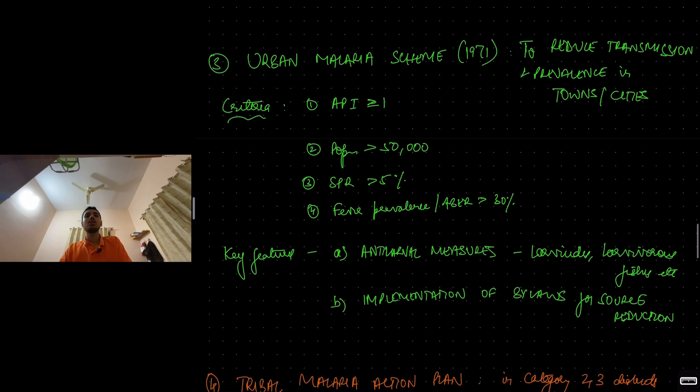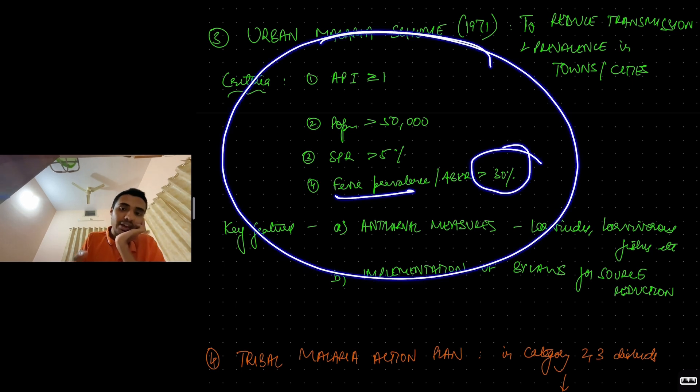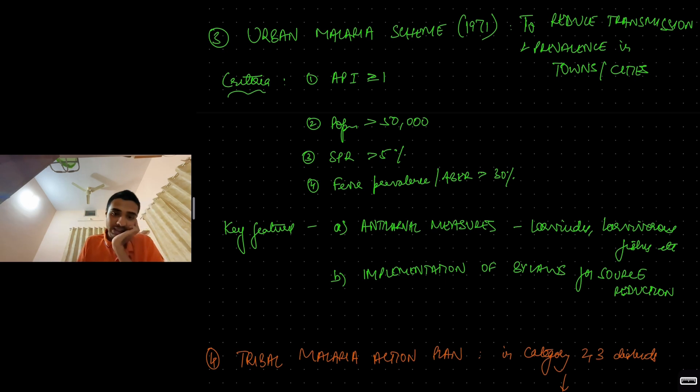Next thing is urban malaria scheme. Basically, in 1971, to reduce malaria transmission in urban settings, that is town cities, this scheme was launched. But not all towns and cities. API has to be more than or equal to 1. That means it has to be endemic for malaria. Population has to be more than 50,000. Slide positivity rate has to be more than 5% and fever prevalence has to be more than 30%. This is the criteria for any town or city to come under urban malaria scheme.